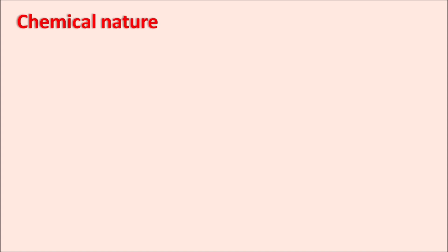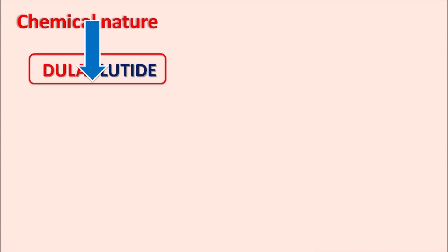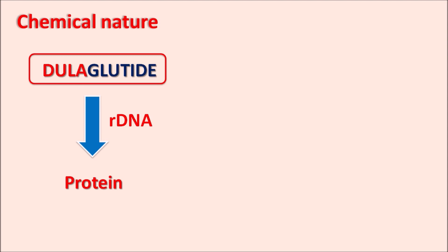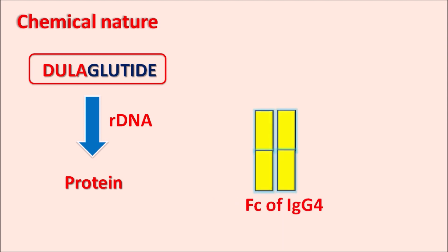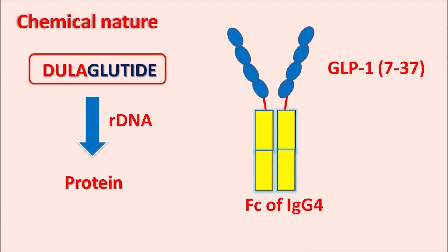First, let us see the chemical nature of this drug. Dulaglutide is a protein made using recombinant DNA technology, and it resembles human GLP-1 up to 90 percent. A fragment of GLP-1 is attached to the Fc binding site of IgG-4 — the Fc component of human immunoglobulin G-4. A small linking peptide is incorporated, which is attached to the GLP-1 fragment at its N-terminal end. This entire structure is Dulaglutide.